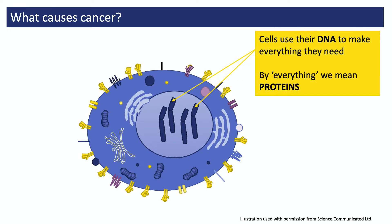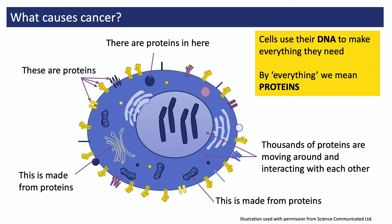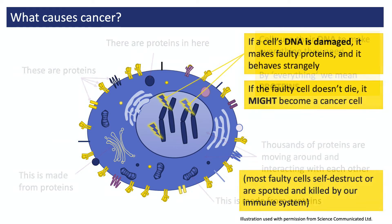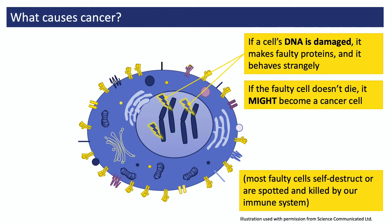Using the information in their DNA, our cells can make everything they're ever going to need and perform all the tasks necessary to keep our body healthy and working properly. When I talk about a cell needing to make things, I'm basically talking about proteins. Our cells use their DNA to make thousands of different proteins, which come in all sorts of shapes and sizes and perform different functions — making energy, transporting things, giving the cell its shape, allowing communication with neighbours, and telling the cell when to multiply and even when to die. So if a cell's DNA becomes damaged, the proteins it makes will also be faulty, and it might start behaving strangely.